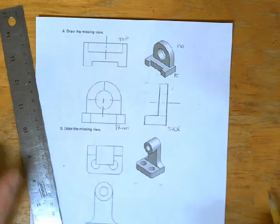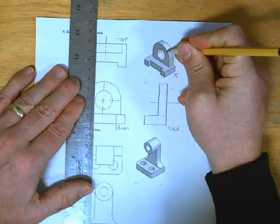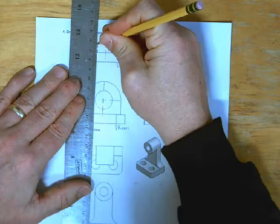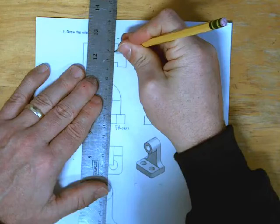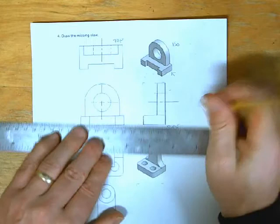The next part that we're going to do is to draw the hidden lines. Okay, because we can't see hidden lines, these holes going through the top of this, I'm going to draw dash lines on the top view lining up with the edge of the circle. I'm going to do the exact same thing on the side view.